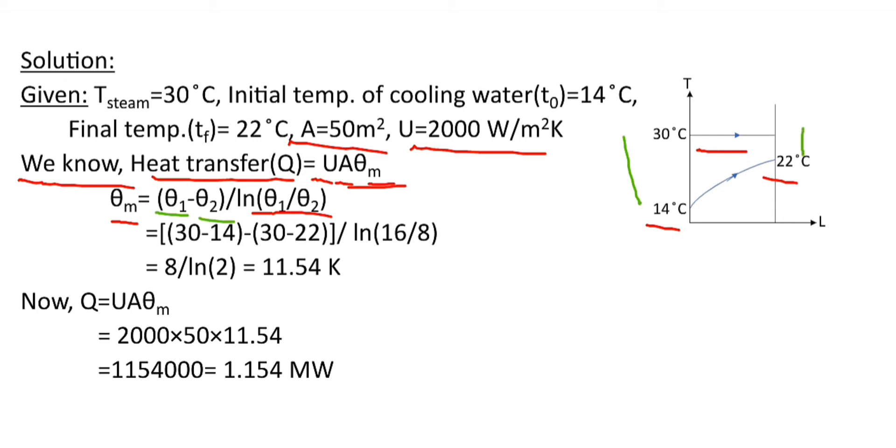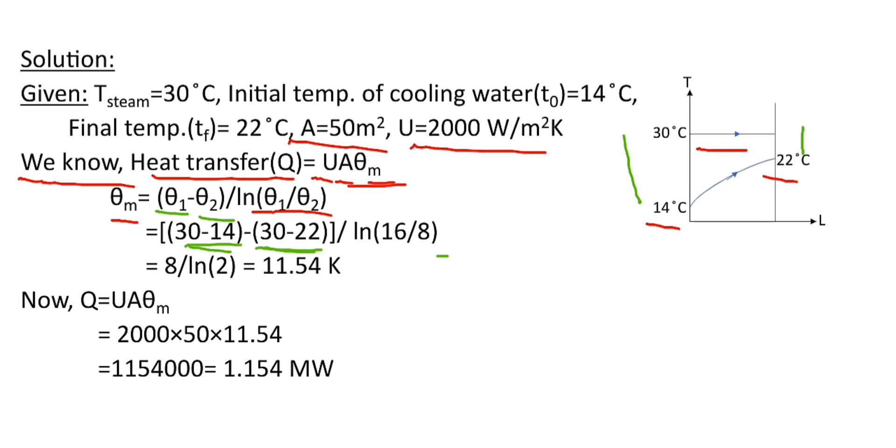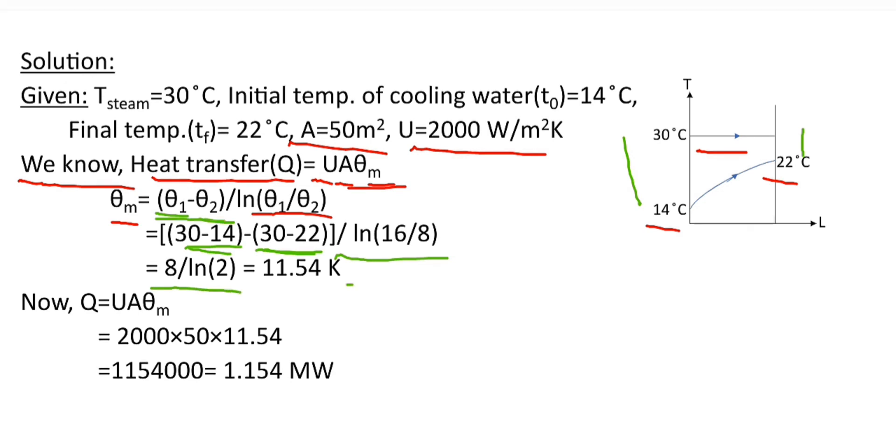So theta_1 is equal to 30 minus 14, and theta_2 is equal to 30 minus 22. So theta_1 is equal to 16 and theta_2 is equal to 8. So theta_m equals 16 minus 8 divided by ln of 16 divided by 8, which becomes 8 divided by ln 2. So from here we are getting the value of theta_m which is equal to 11.54 K.